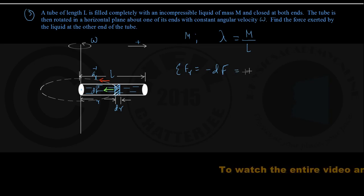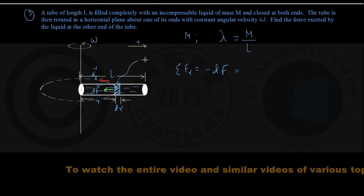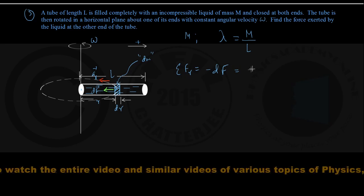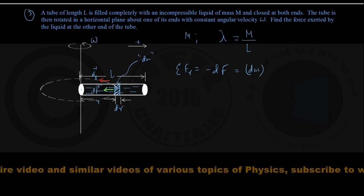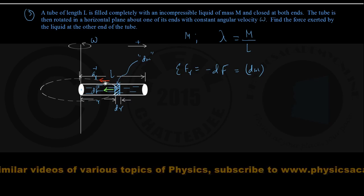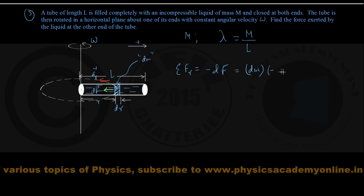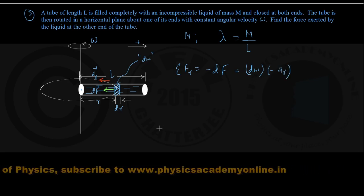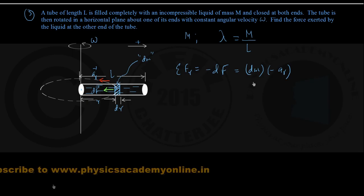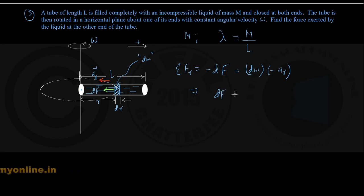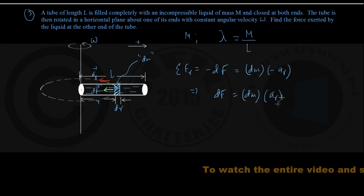This must equal the mass of the element, DM, multiplied by the centripetal acceleration, which is directed radially inward and therefore taken as minus AR in scalar notation. So we have minus DF equals DM times minus AR. Cancelling the minus signs, the magnitude of the differential force DF is given by DM into AR.